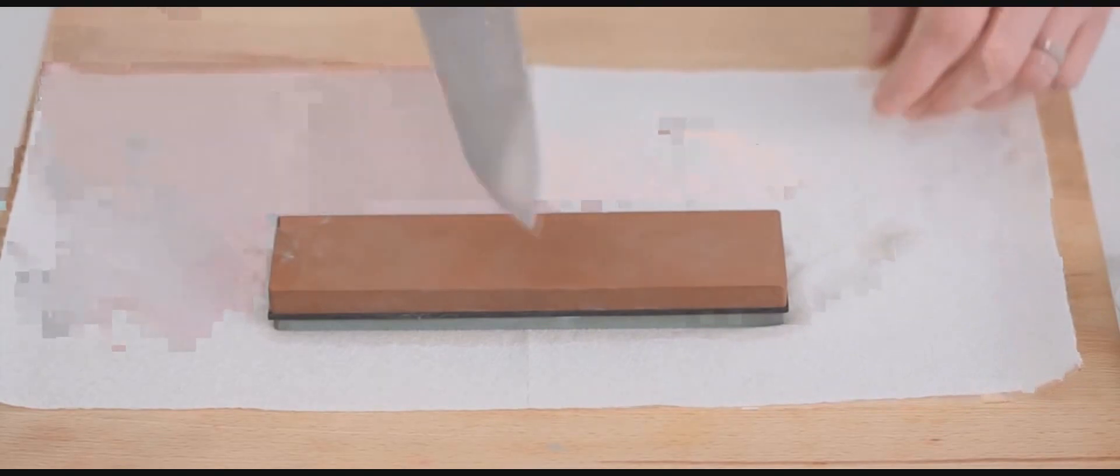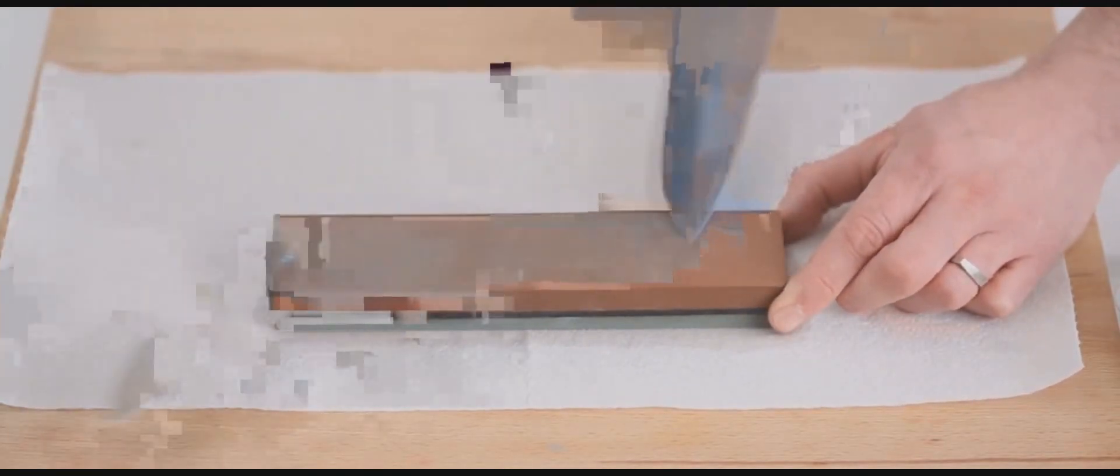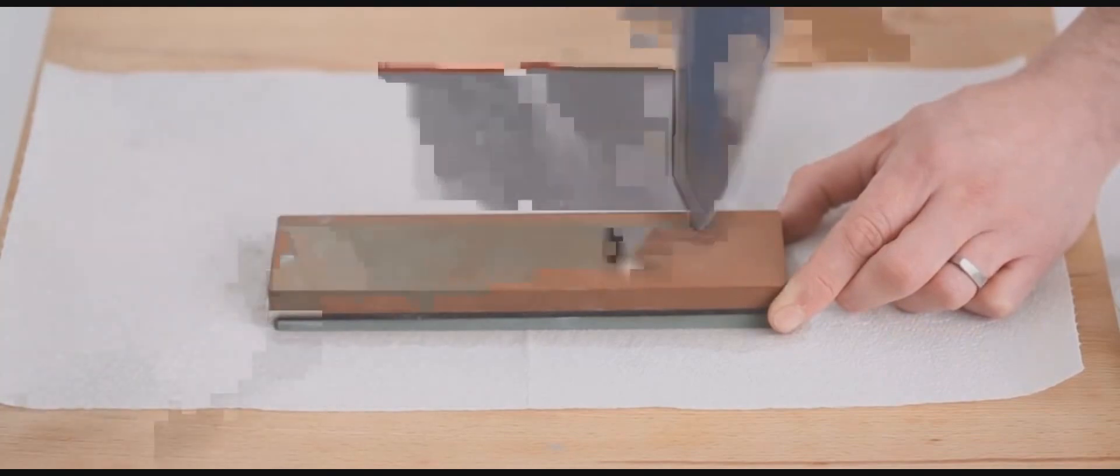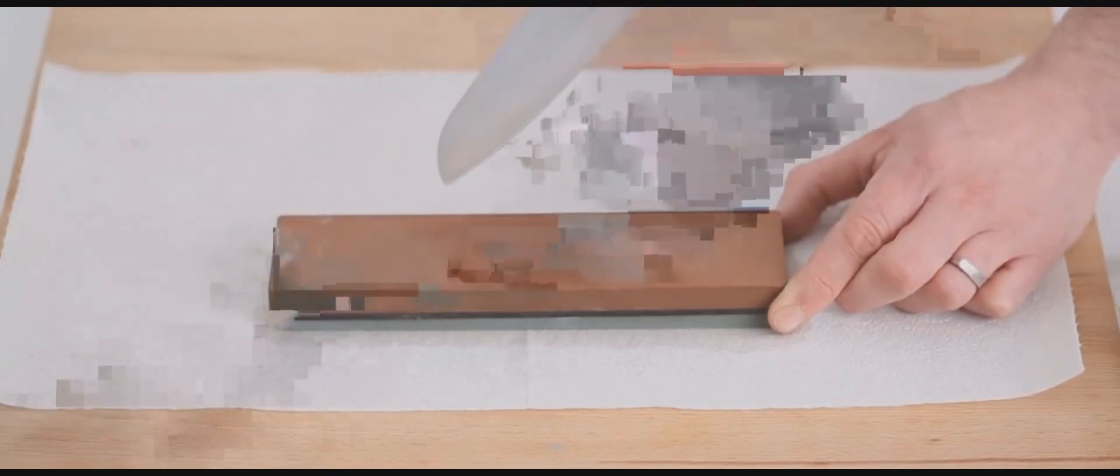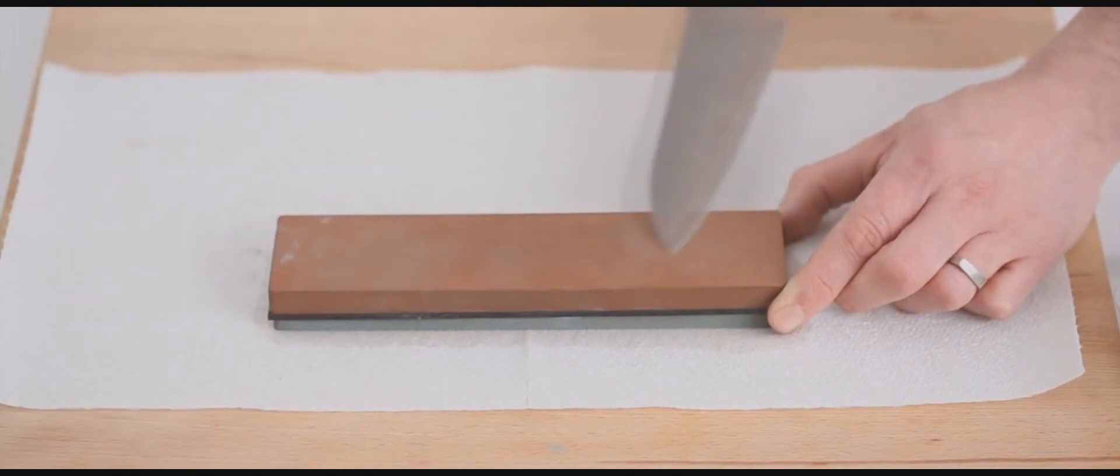So to use this, it's exactly the same as it was on the coarser stone. Same action, same angle, but you don't need to work for so long because you're not grinding a new edge on, you're just refining the edge that's already there.